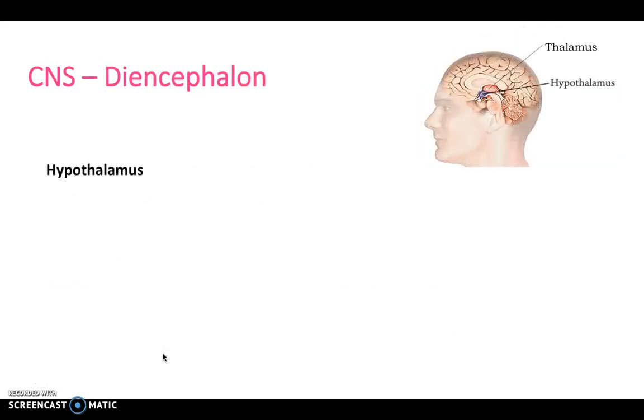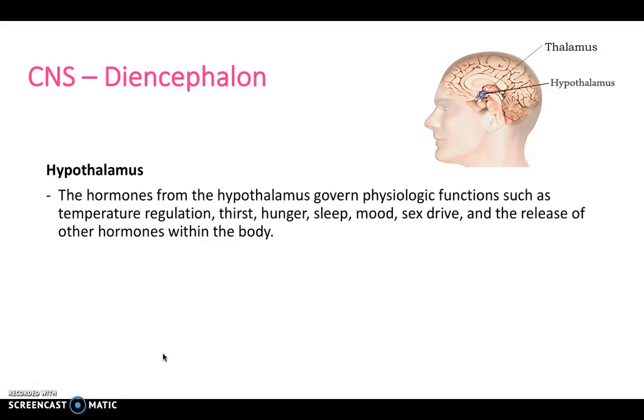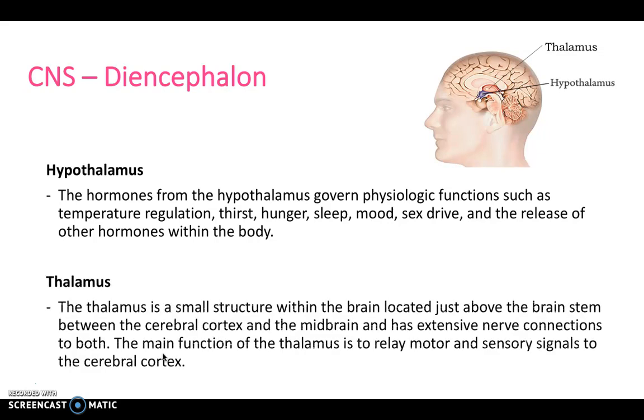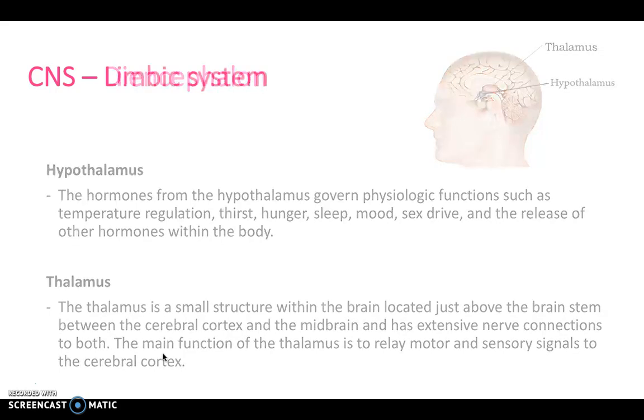Be aware of the diencephalon, made up of the hypothalamus, our monitor of homeostasis in the body, and the thalamus, that relay station in the brain which allows impulses to be distributed out towards the cortex, to the different regions of the cerebral cortex.